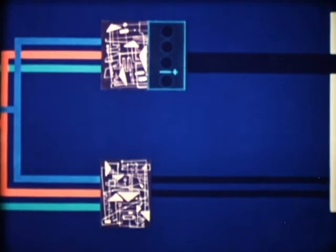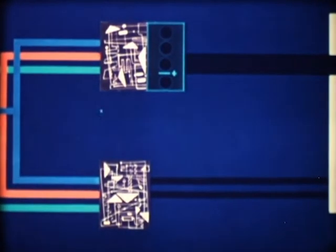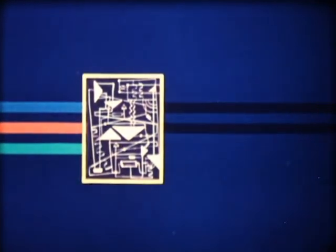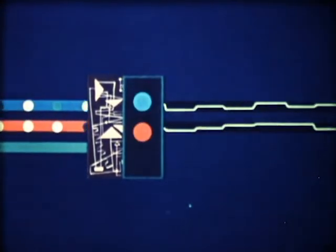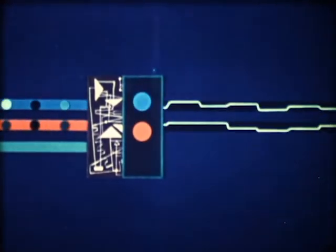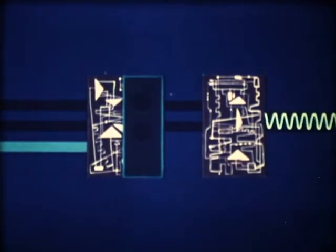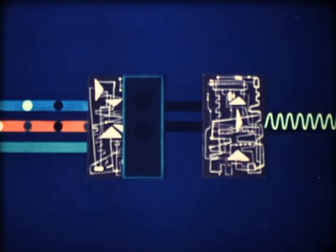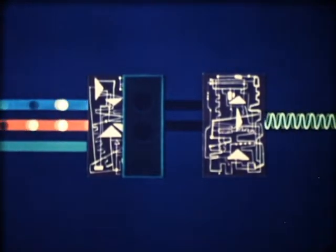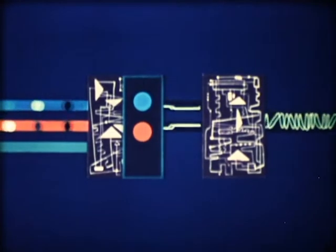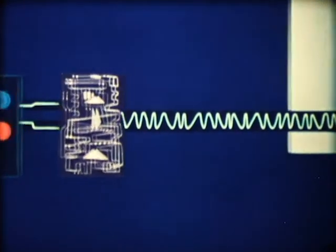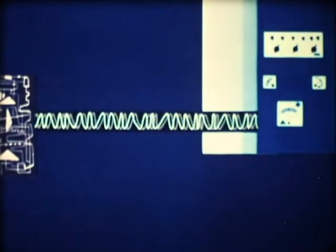There now remains the question of transmitting the color information. In parallel with the adding circuit is another circuit, which extracts the necessary color information from the primaries. In this example, only the red and blue signals are used. In order to transmit the color information, a sine wave oscillator is used to produce a sub-carrier signal, and this is modulated with the color information. This modulation process is represented here in a simplified manner, the technical details being beyond the scope of this film. The modulation of the sub-carrier gives us the required independent color signal.